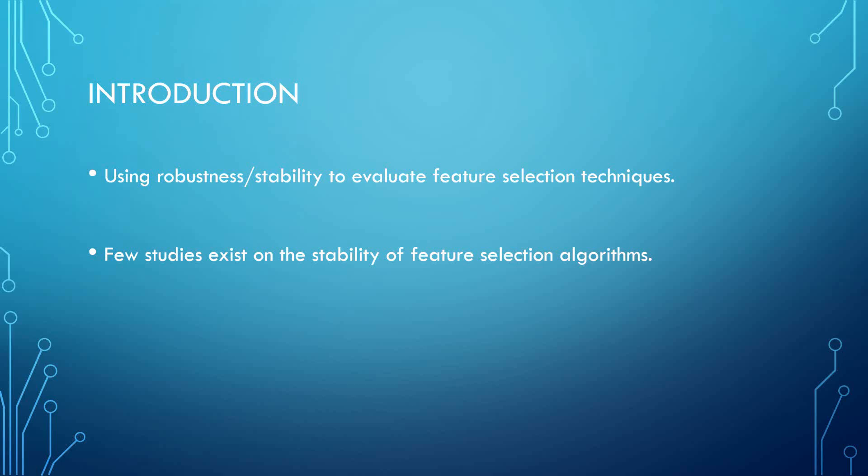A few studies exist on the stability of feature selection algorithms. This baseline paper evaluates the stability performance of 18 different feature selection techniques. The main contribution is that the stability of feature selection techniques is considered by comparing the selected features before and after some instances are deleted from the dataset, rather than directly comparing separate subsamples of the original dataset. This is an important distinction because in many real-world situations, software practitioners want to know whether adding additional instances to the dataset will change the result of feature selection.